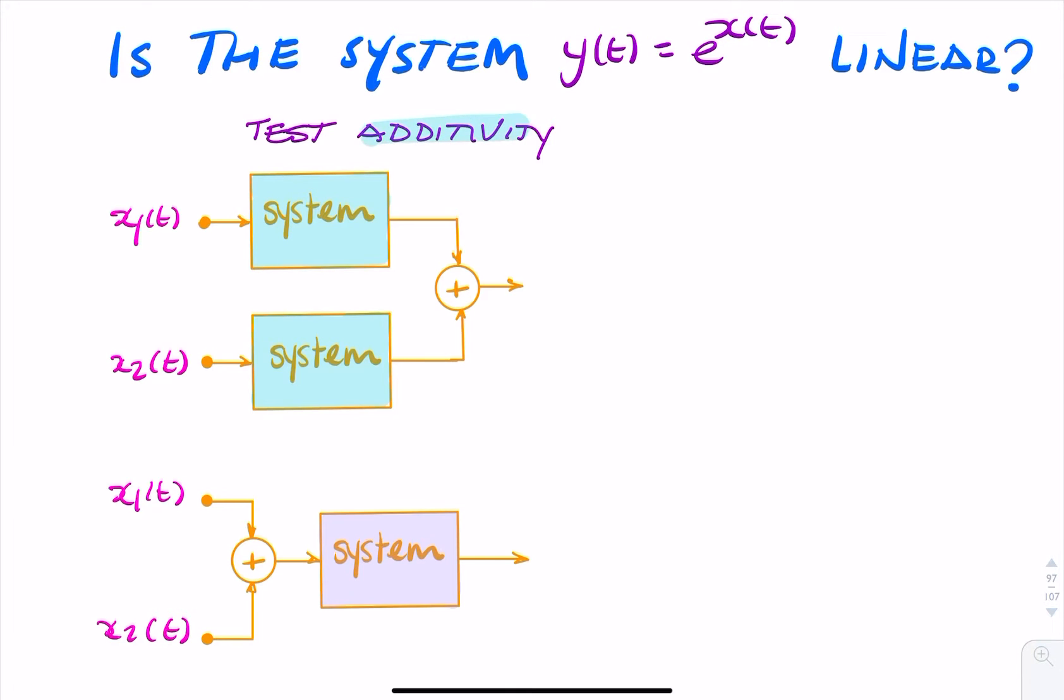I want to test additivity. So I put x1 and x2 as inputs to the system, and let's write down the outputs at each of these points. Here I'd have e to the power x1(t), and here I'd have e to the power x2(t). As the output to the system, you would add these two together, so this plus this, and that would give me e to the x1(t) plus e to the x2(t).